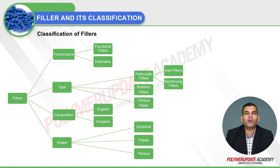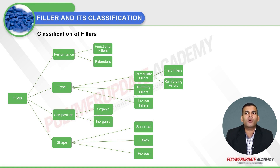The third classification is based on composition, referring to the chemical structure in terms of organic and inorganic materials. The fourth classification is based on shape, which categorizes materials into spherical forms such as glass microspheres, flaked forms which can be micro-structural, and fibrous fillers such as glass fiber and natural fibers like jute and hemp.